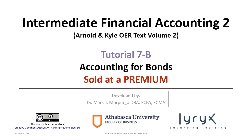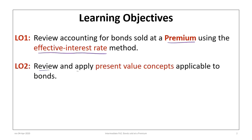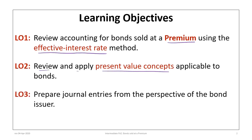Hello and welcome to Intermediate Financial Accounting 2 Tutorial 7b. This is the second of a series of two tutorials focused on accounting for bonds. This time we'll be looking at bonds that are sold at a premium. We have three learning objectives: to review accounting for bonds sold at a premium using the effective interest rate method, to review and apply present value concepts applicable to bonds, and to prepare journal entries from the perspective of the bond issuer.